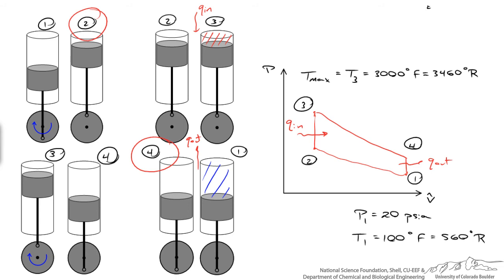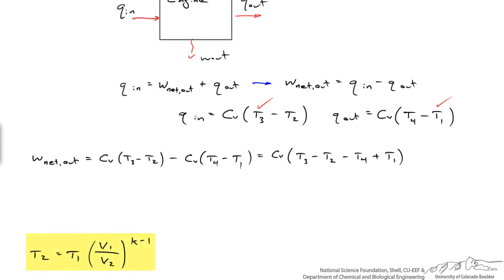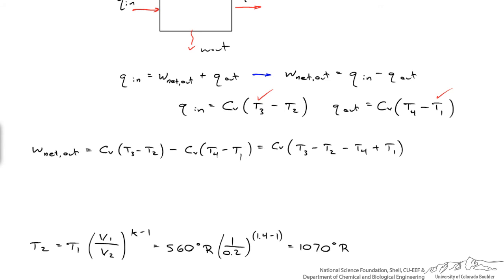We do know that this is an isentropic compression between one and two, and that allows us to use a relationship to calculate the temperature at point two based on the temperature at point one. And between states three and four, we do know that this is an isentropic expansion, so we've got a relationship now to calculate the temperature at four based on the temperature at three. So here's the relationship between T two and T one, it's this isentropic compression. And we set delta S equal to zero, and if it's an ideal gas, we can use this relationship. And if I plug in numbers, a temperature of a thousand and seventy degrees Rankine. So we now know T two.